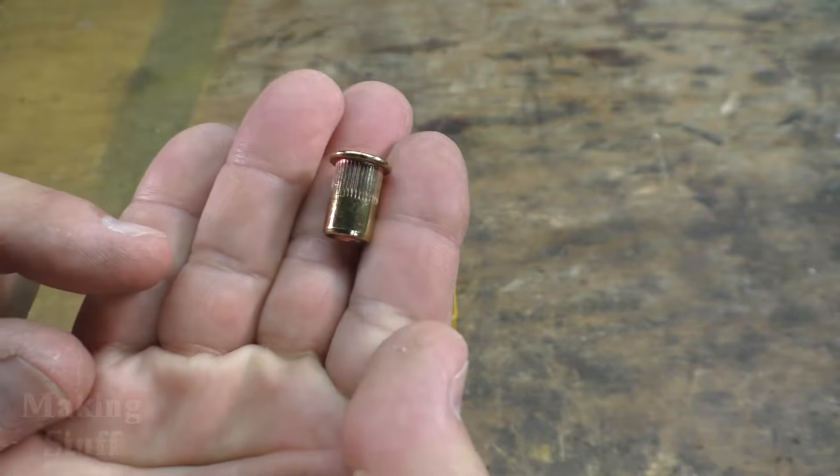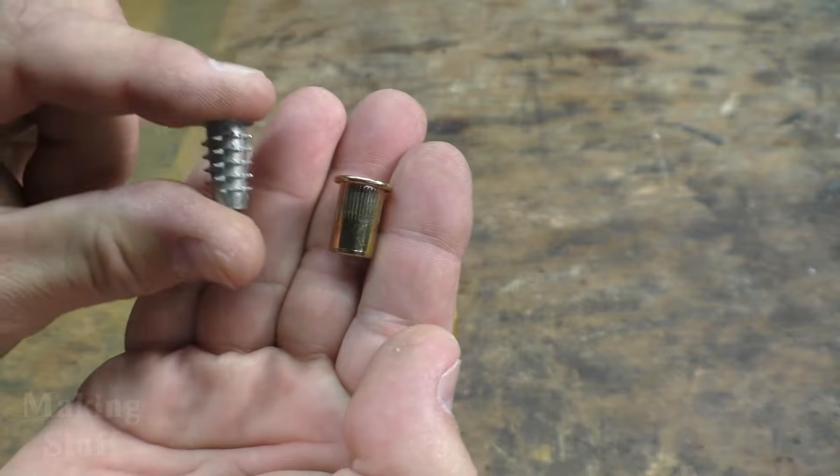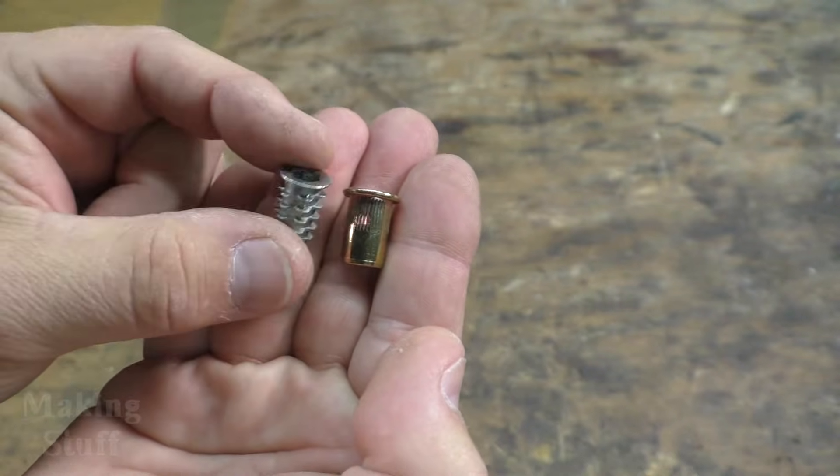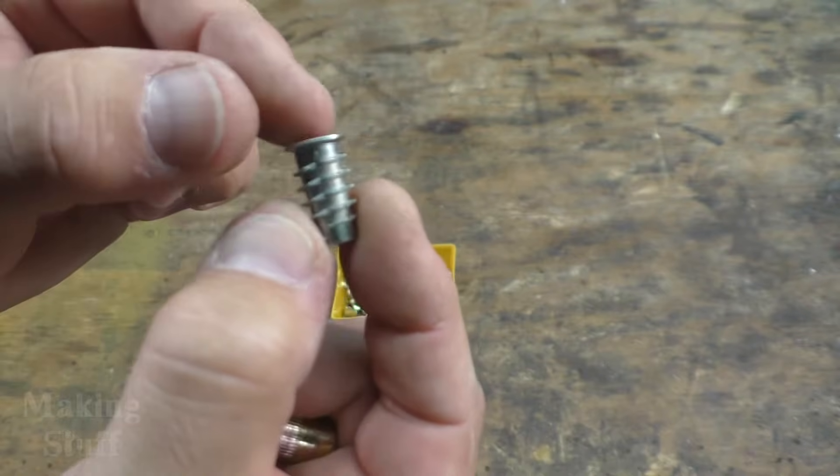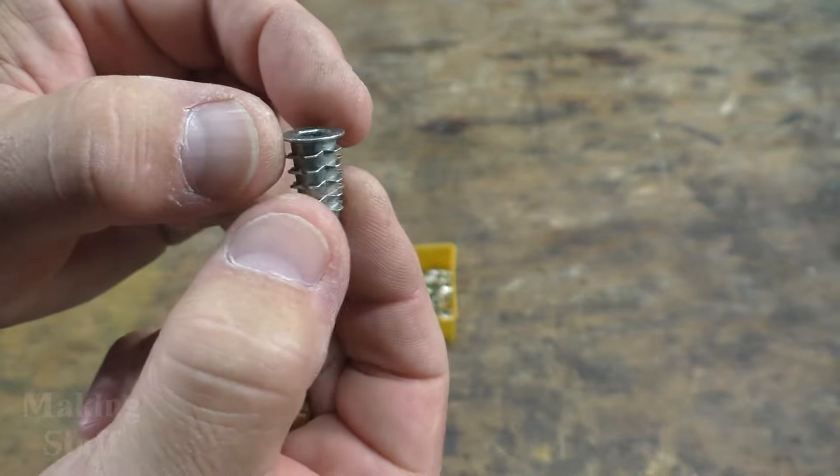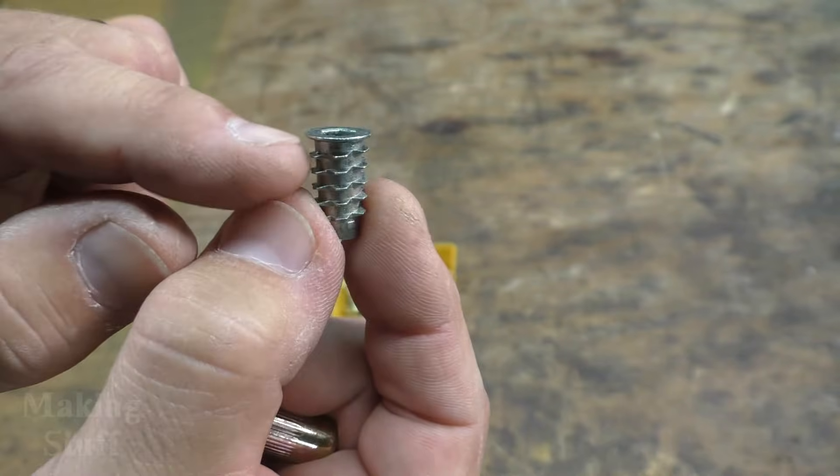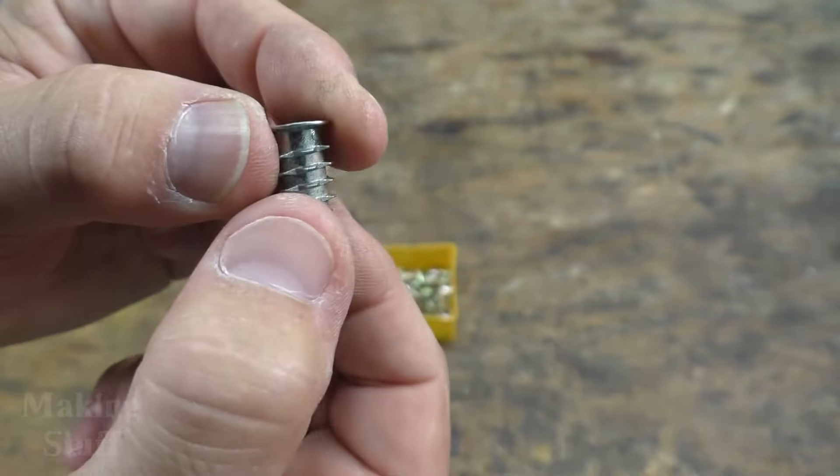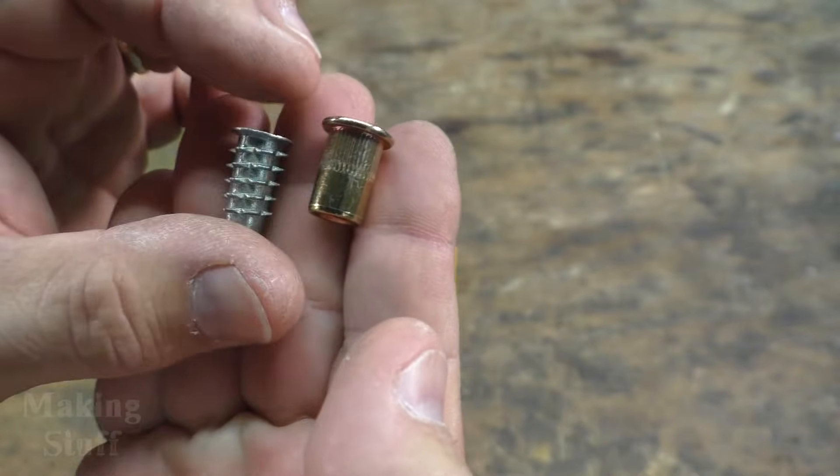Now some of you are probably wondering what is a rivet nut insert and what would you use it for? Well it is very similar to a threaded insert. Now the threaded insert has threads and this would be screwed into a soft piece of wood or a piece of plastic but it'd be really hard to screw that into a thin piece of metal or any metal for that case and that's where the rivet nut comes into place.